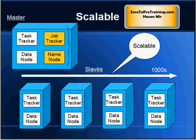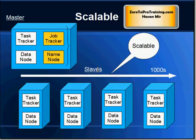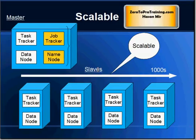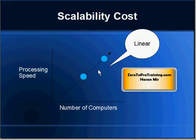One very important attribute of Hadoop is that it is highly scalable. A Hadoop system can consist of one computer or scale up to thousands of computers depending on requirements. As your data grows you can add computers, which results in significant cost savings for the business. Importantly, the scalability cost is linear — if you want to double the speed of processing, simply double the number of computers.